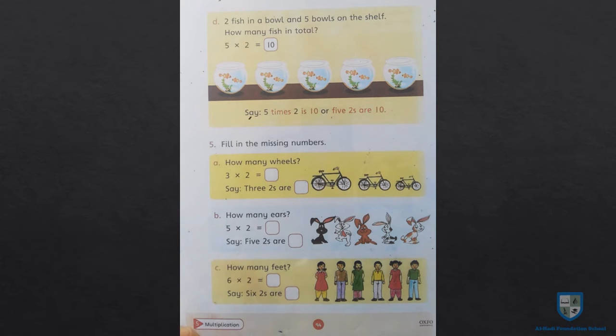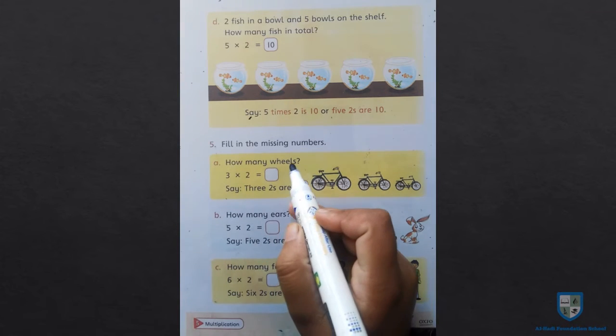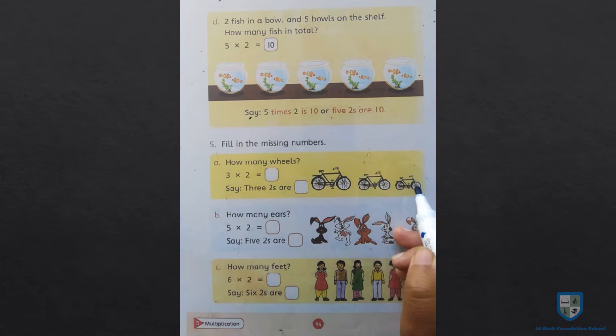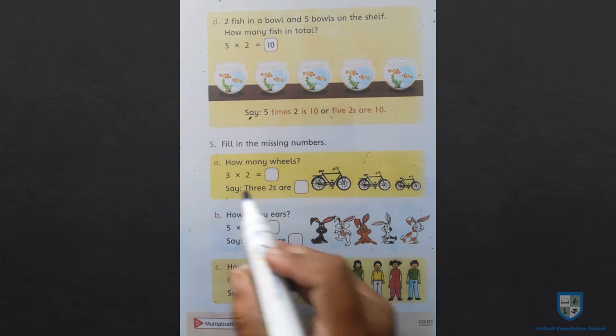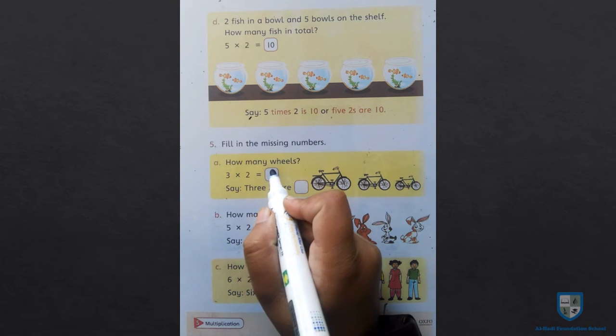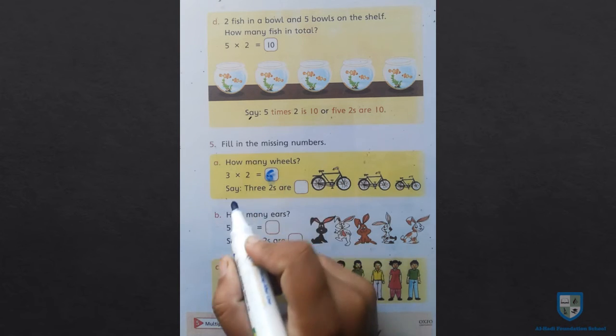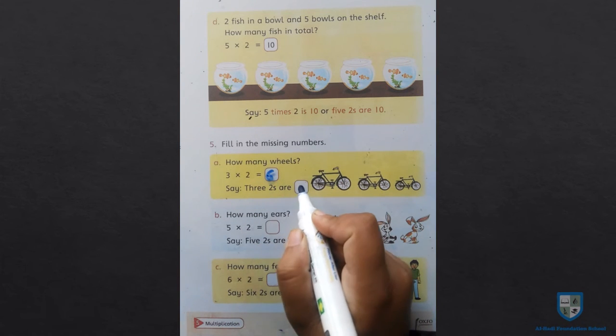Now question 5: fill in the missing numbers. How many wheels? There are 3 cycles, and every cycle has 2 wheels. So 3 multiplied by 2 is equal to 6. 3 twos are 6.